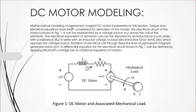Mathematical modeling of a permanent magnet DC motor is presented in this session. Torque and electrical equations have been considered for derivation of the model. The electrical circuit of the motor is shown in figure one. It can be represented by a voltage source VA across the coil of the armature. This external source gives voltage to the rotor, or you can say the armature.